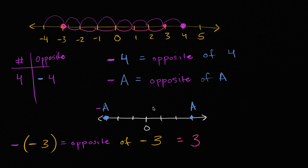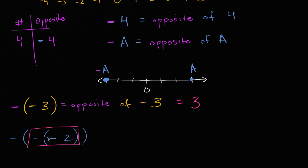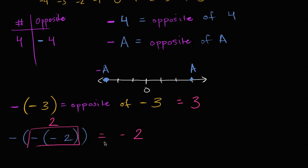Hopefully this gives you a better appreciation for what 'opposite' means and how it relates to the negative symbol. We could keep going: what is the negative of the negative of negative two? The negative of negative two is the opposite of the opposite of two, which is just two. But then you take the opposite of that two, giving negative two. Every time you put a negative in front, you're flipping to the other side of the number line.